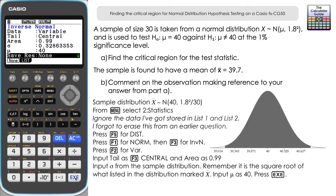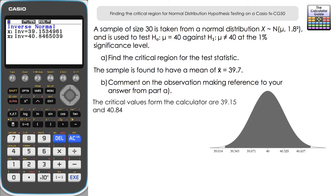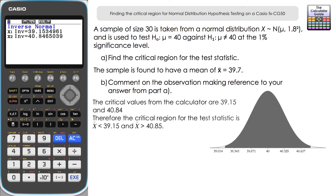Press execute and two critical values appear. The lower critical value is 39.15 — anything less than that falls in the lower 0.5% tail. The upper critical value is 40.85 — anything greater falls in the upper 0.5% tail. So the critical region for the test statistic is: x̄ < 39.15 or x̄ > 40.85.